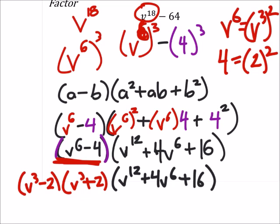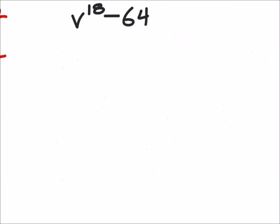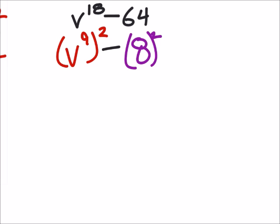Let's look then at factoring this as though it were the difference of 2 squares. And just see how it comes out, all right? All right, so we're looking at two perfect squares. Let's see what we get. This would be v to the power of 9. That's the one that I meant it to be originally. And 64 is 8 squared.